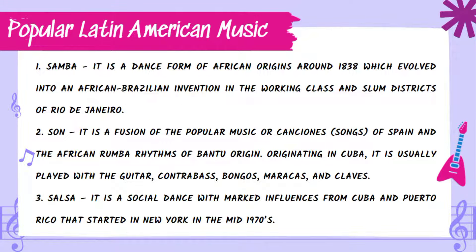Rooted from those influences, here are popular Latin American music forms. First, Samba — a dance form of African origins around 1838, which evolved into an African-Brazilian invention in the working class districts of Rio de Janeiro. Second, Son — a fusion of Spanish popular songs and African rumba rhythms of Bantu origin, originating in Cuba, usually played with guitar, contrabass, bongos, maracas, and claves. Third, Salsa — a social dance with marked influences from Cuba and Puerto Rico that started in New York in the mid-1970s.